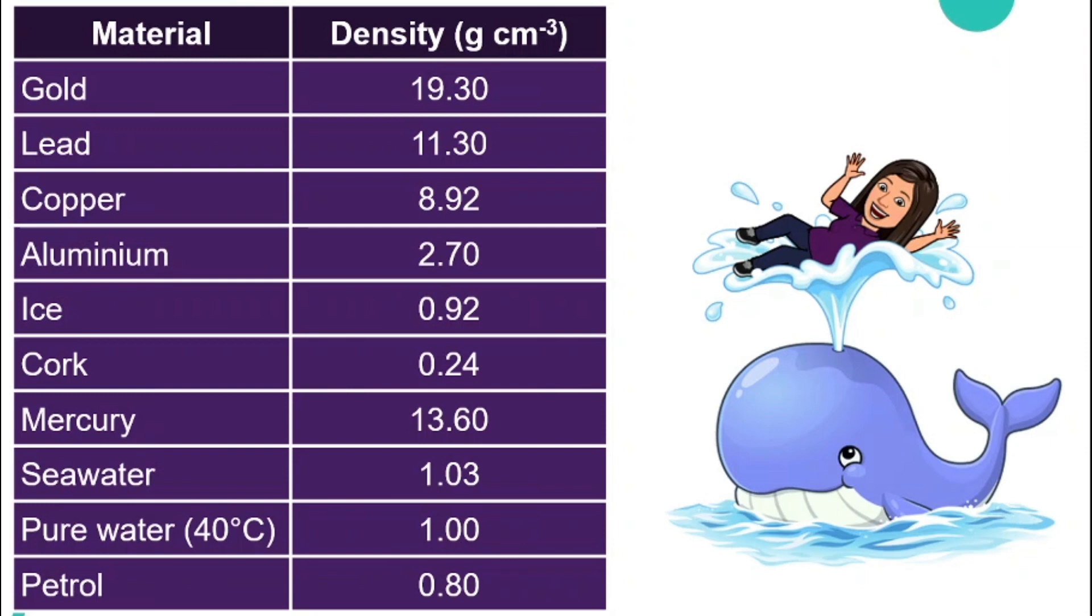So here are a list of different materials. We have solids like gold, lead, copper, aluminum, ice, cork, and also we have a few examples of liquids like mercury, seawater, pure water and petrol and their respective densities.